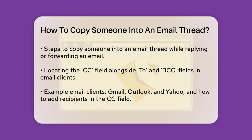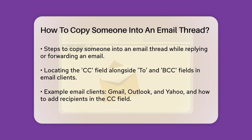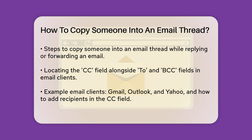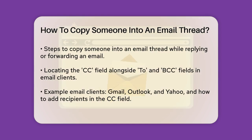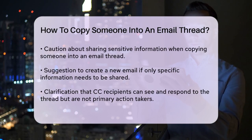Here's how it works. If you're replying to an email or forwarding one, you can add the person you want to copy into the CC field. This field is usually found along with the To and BCC fields in your email client. For example, if you're using Gmail, Outlook, or Yahoo, you can simply type the person's email address in the CC field. When you send the email, the CC recipient will receive the entire thread, allowing them to see the context of the conversation.